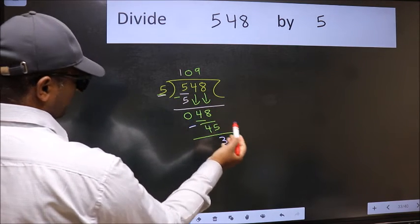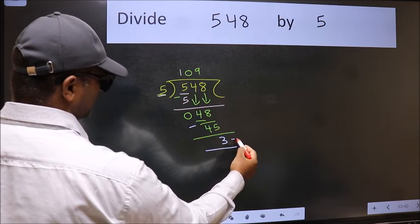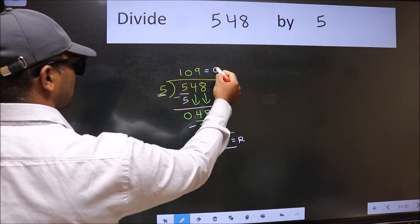No more numbers to bring it down. So we stop here. This is our remainder and this is our quotient.